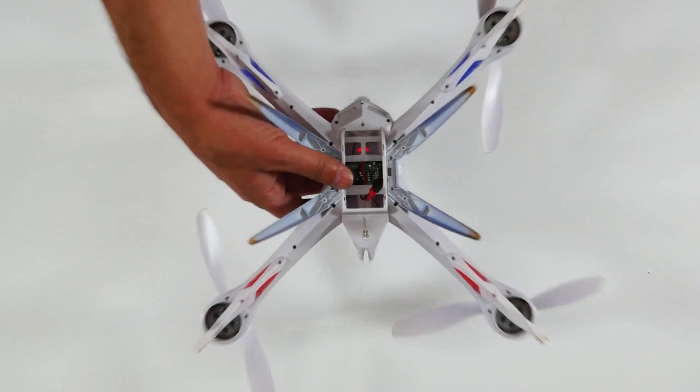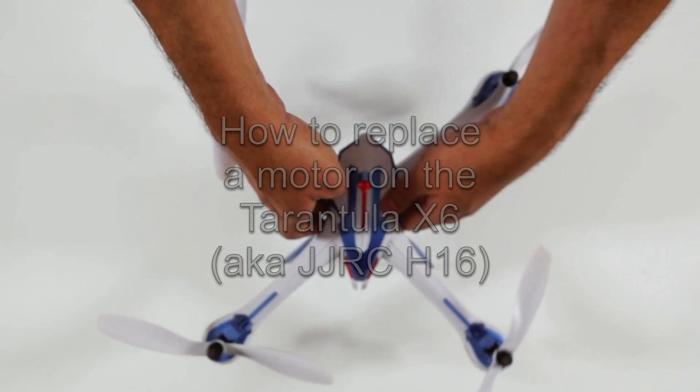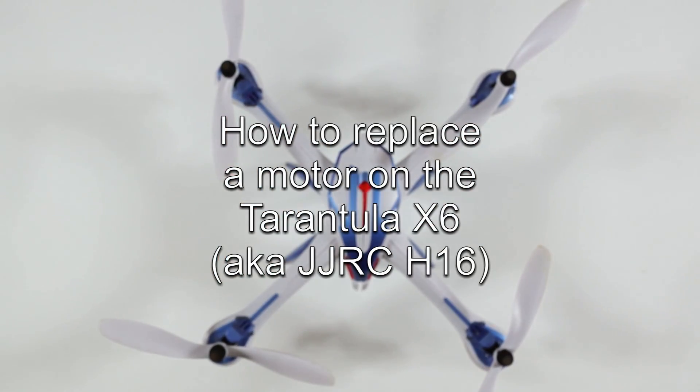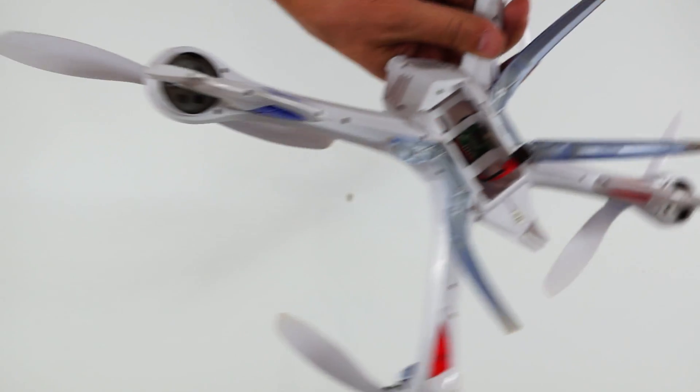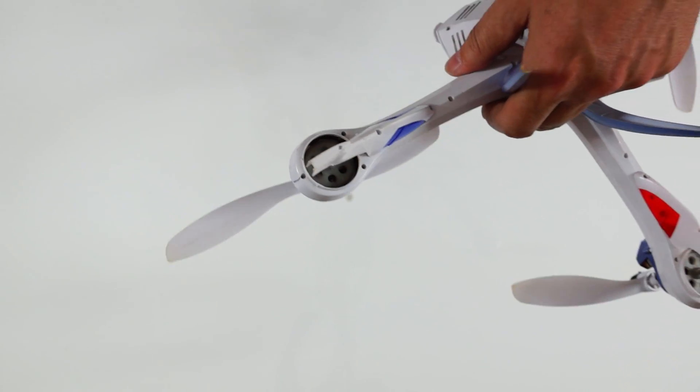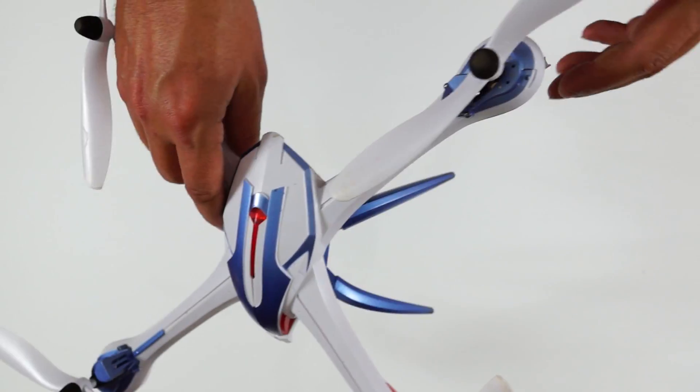What I would like to show you today is how I go about replacing a motor on my Tarantula X6. The Tarantula X6, or JJRC H16 as it's also known, uses brushed motors which are not as durable as brushless motors. They can fail a little easier and do not last as long.